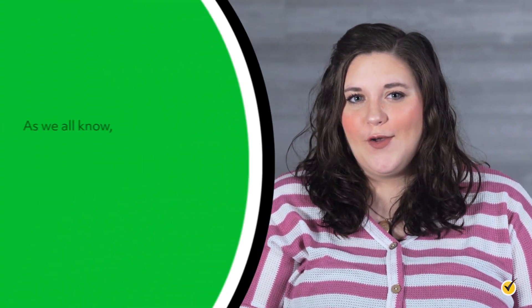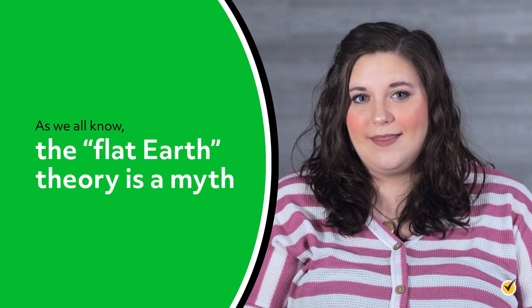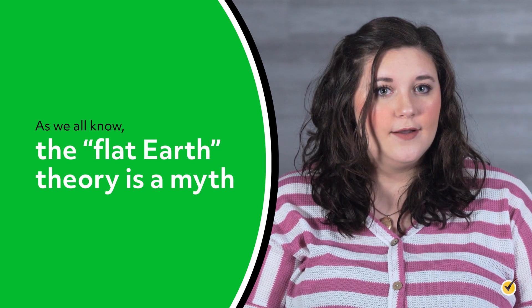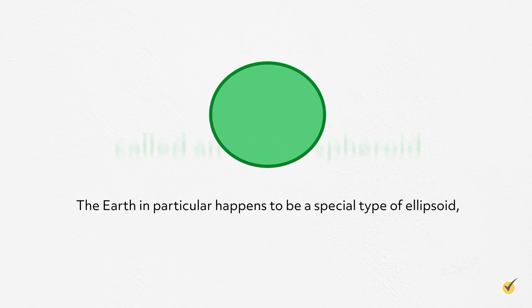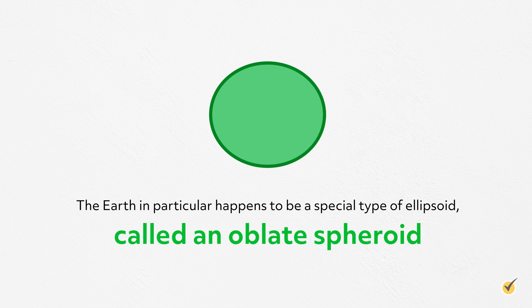Let's start with the shape of the Earth. As we all know, the flat earth theory is a myth. Earth is a sphere — well, almost. For the sake of simplicity, we'd normally just say Earth is a sphere, but that's not entirely true. It looks pretty spherical, but it's actually an ellipsoid. The Earth in particular happens to be a special type of ellipsoid called an oblate spheroid.